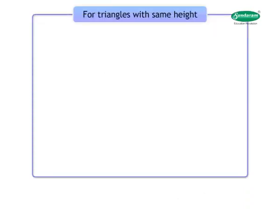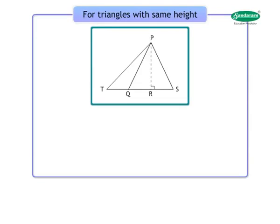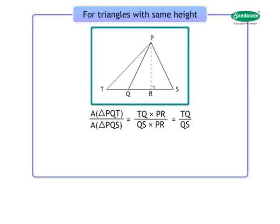For triangles with common height, look at the figure. Triangle PQT and triangle PQS have the same height PR. Therefore, area of triangle PQT upon area of triangle PQS is equal to TQ into PR upon QS into PR, which equals TQ upon QS.